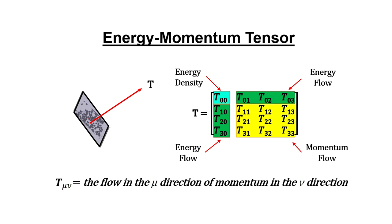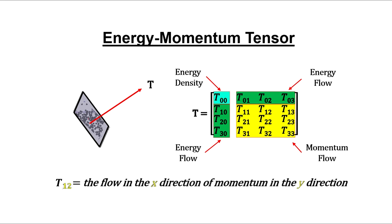The rest are momentum flows across surfaces. For example, T12 keeps track of the flow in the x-direction of momentum in the y-direction. These are caused by pressure and stress at each surface.